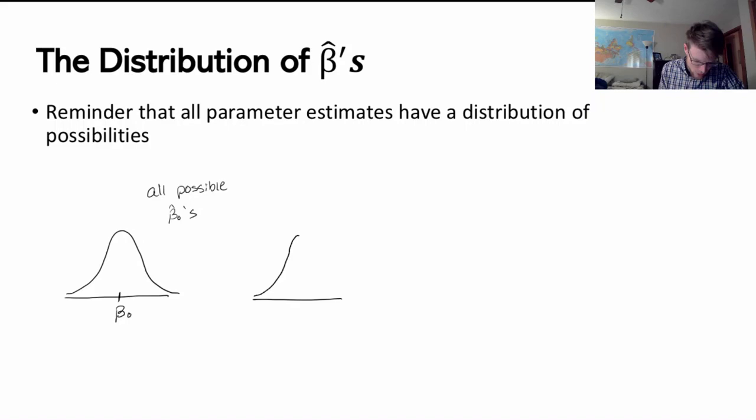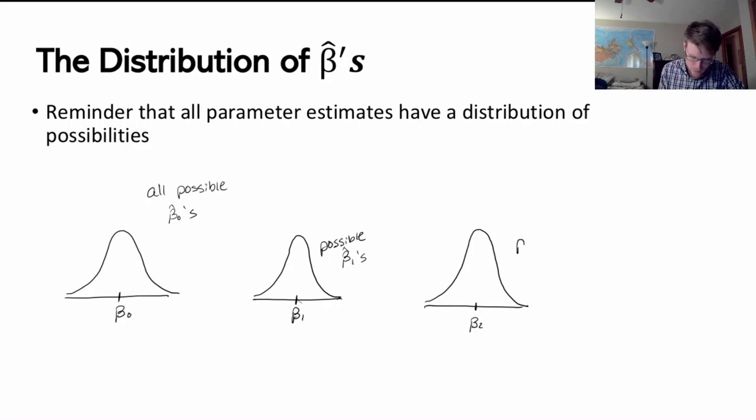Whatever that parameter is, the relationship that these variables have is going to be normally distributed around that value. I can do the same thing for beta hat 1 — beta hat 1 is going to be normally distributed around beta 1. Similarly, beta hat 2 is going to be normally distributed around the true beta 2 value.